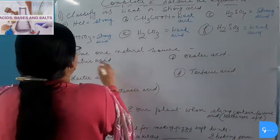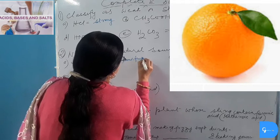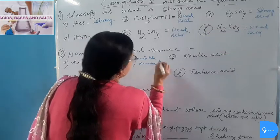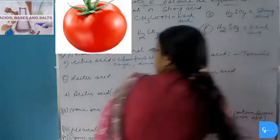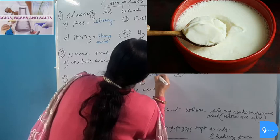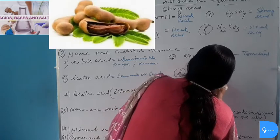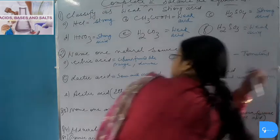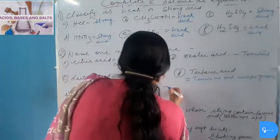Name one natural source: Citric acid is found in citrus fruits like orange and lemon. Oxalic acid is found in tomatoes. Lactic acid is found in sour milk or curd. Tartaric acid is found in tamarind (Imli) and unripe grapes. Acetic acid, also known as ethanoic acid, is found in vinegar.